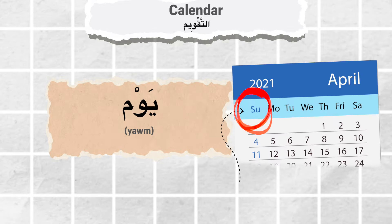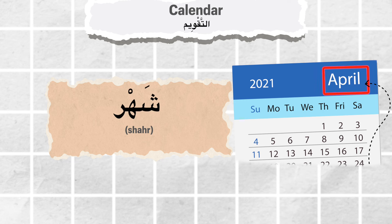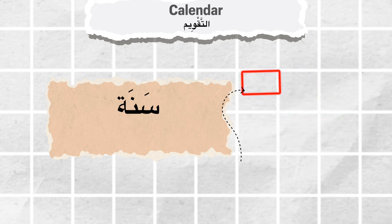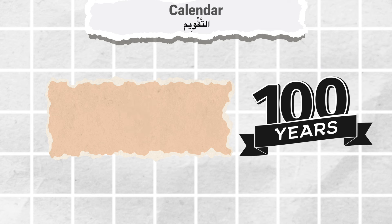يوم — Day. أسبوع — Week. شهر — Month. سنة — Year. عقد — Decade. قرن — Century.